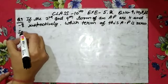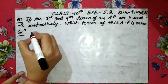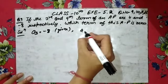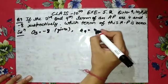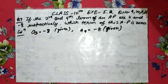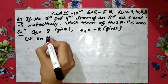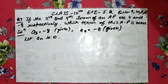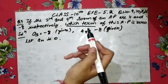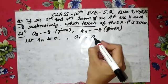Question number 9: If the third term and the ninth term of the AP are 4 and minus 8 respectively — so a3 equals 4 and a9 equals minus 8, that is given to you. After that, which term is zero? We let an equal zero. The meaning of 'which term' is that we need to find n.